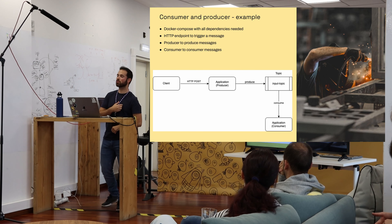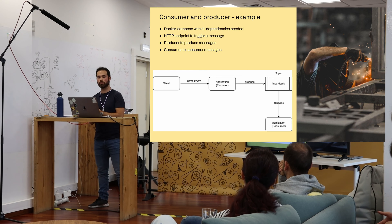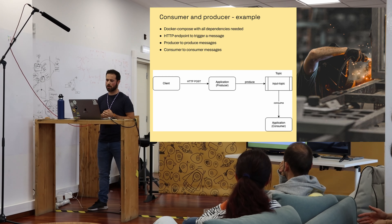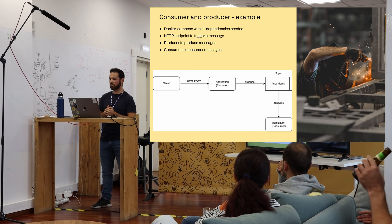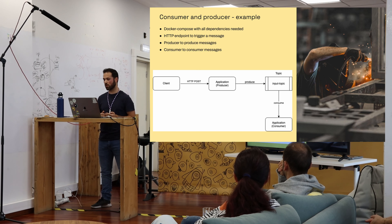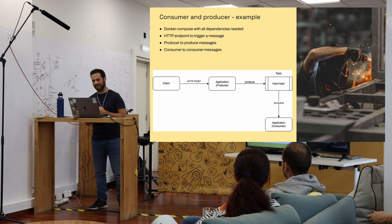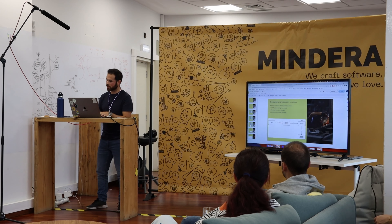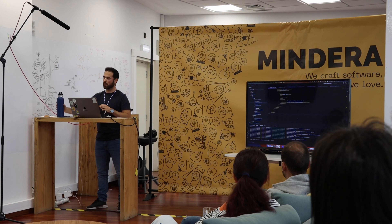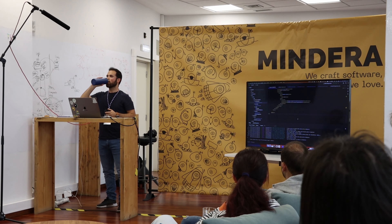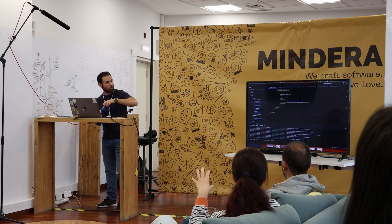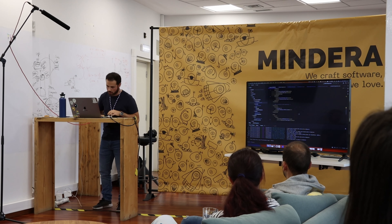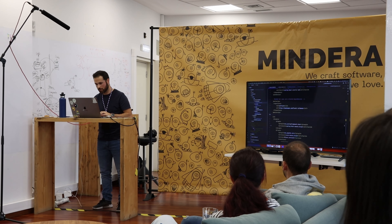Now I'll show a simple example with a consumer and producer. I built a Spring Boot application that has an endpoint, produces to a topic called 'input-topic', and consumes from that same topic. Let me switch to the screen — can you see it? Let me zoom in a bit.